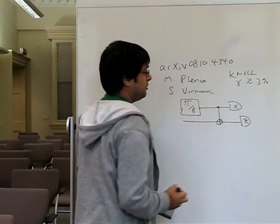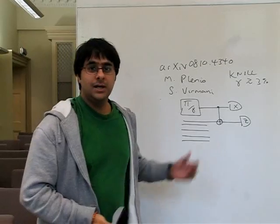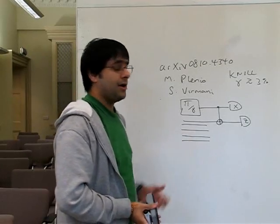They teleport this state into a big ancilla state, which is effectively a very large error correcting code.